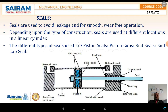The different types of seals are the piston seal, piston cups, rod seals, and end cap seals. These seals are represented and where they are located is shown in the sketch.